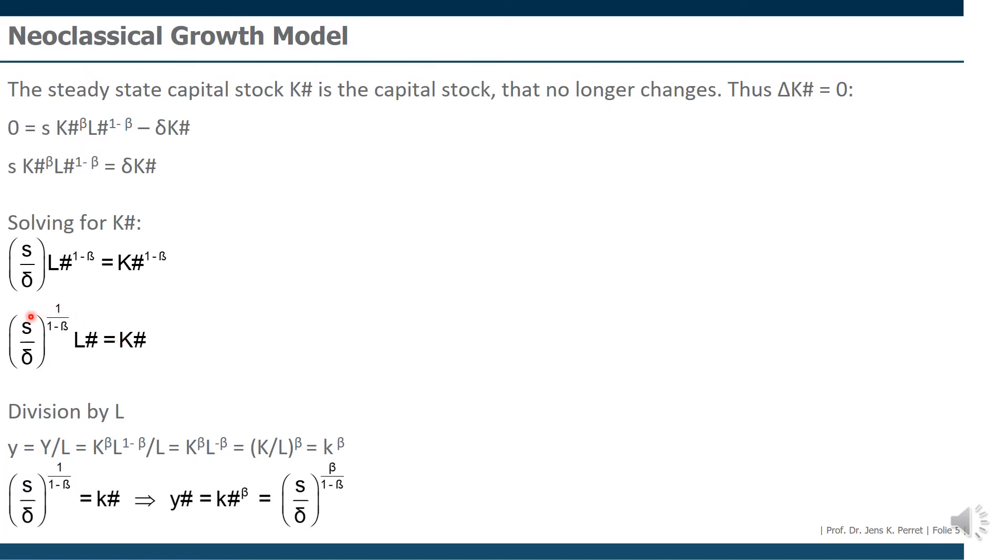If we divide this equation by L, we get the capital stock per capita in the steady state in this version. Since we know that the GDP per capita is simply the capital stock per capita to the power of beta, we can use this equation to also describe our GDP in the steady state. So our long-run GDP per capita solution, which is simply this result to the power of beta. So we take this to the power of beta and the other side as well, giving us here a GDP per capita in the long run of the savings rate divided by the depreciation rate to the power of beta divided by 1 minus beta.